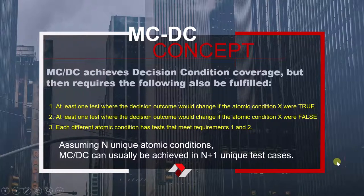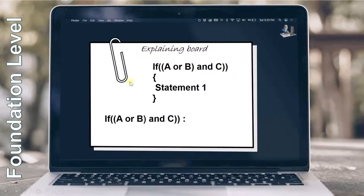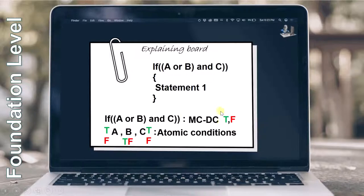Now let's see the example of Modified Condition Decision Coverage. Suppose this is a code given to you — you can see there are 3 atomic conditions and 1 decision. This particular line will be called the decision, and you have to make this statement true and false. A, B, and C are the atomic conditions. To achieve Decision Coverage, we make the decision true and false. To achieve Condition Coverage, we make A, B, and C each true and false, and whenever we do so it should influence the decision — combining all these achieves MC/DC.